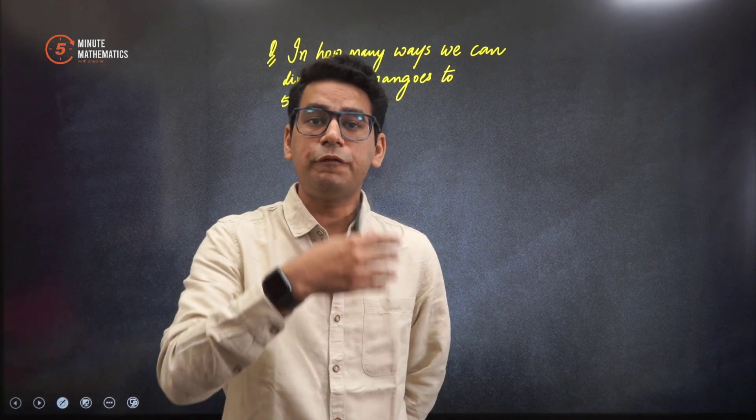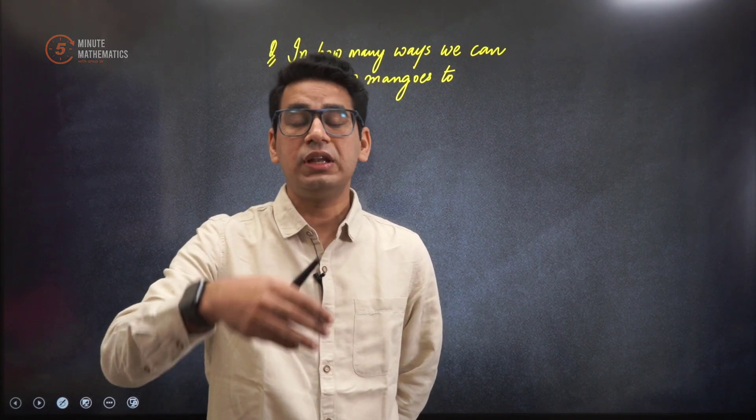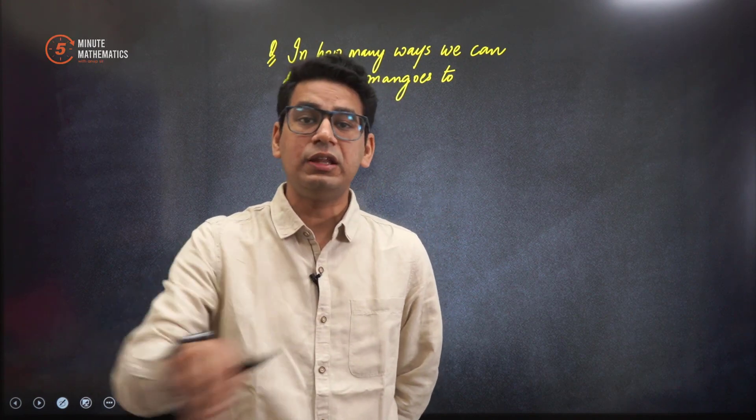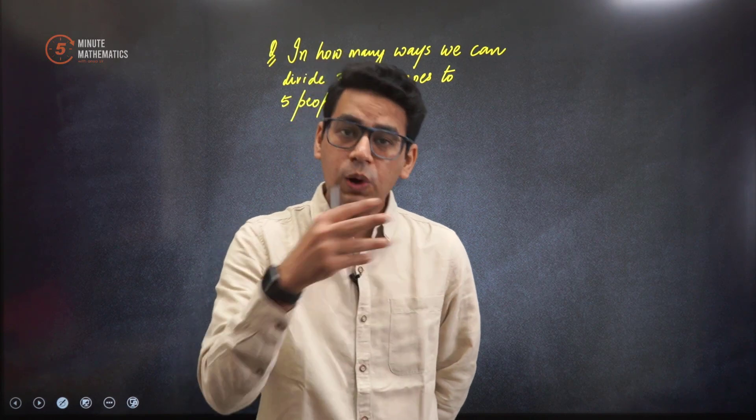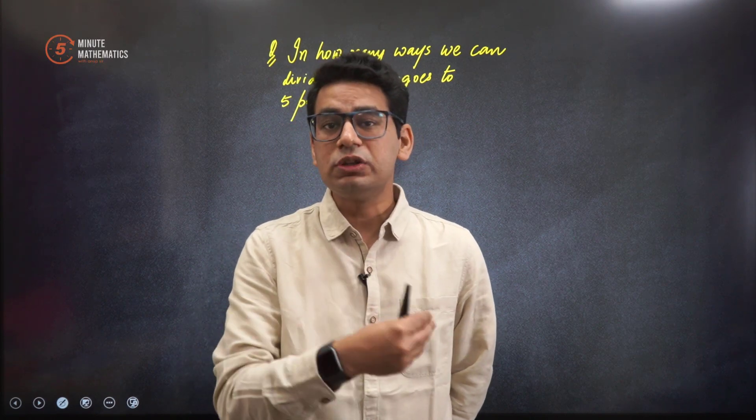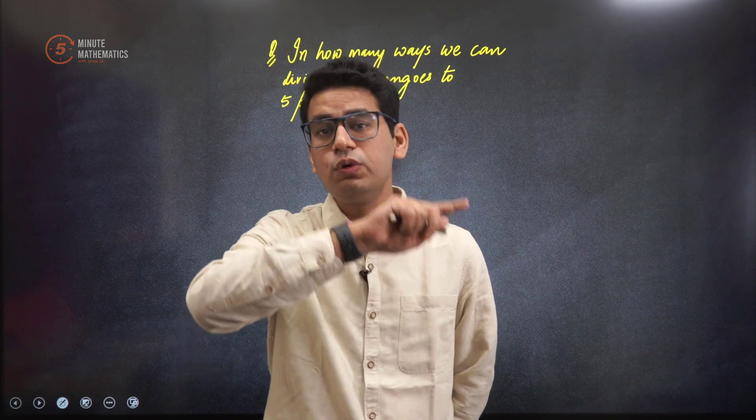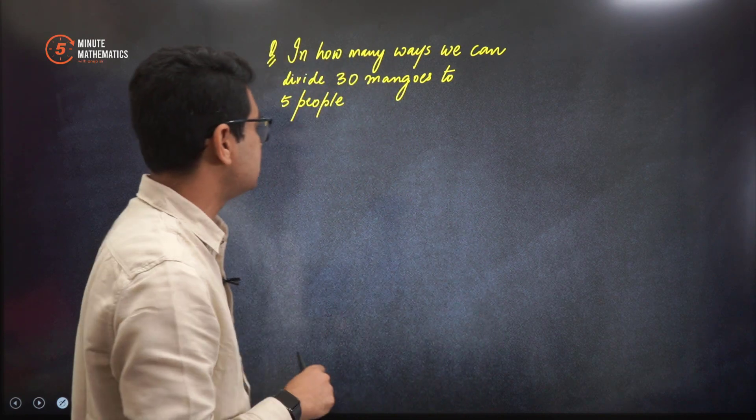It could be possible that the fifth person, the fourth person, and the third person do not get anything. The first two get 15-15, 16-14, whatever the ratio. So all these cases are possible. The answer to this particular question would require you to find all those particular cases. So how do we do it?